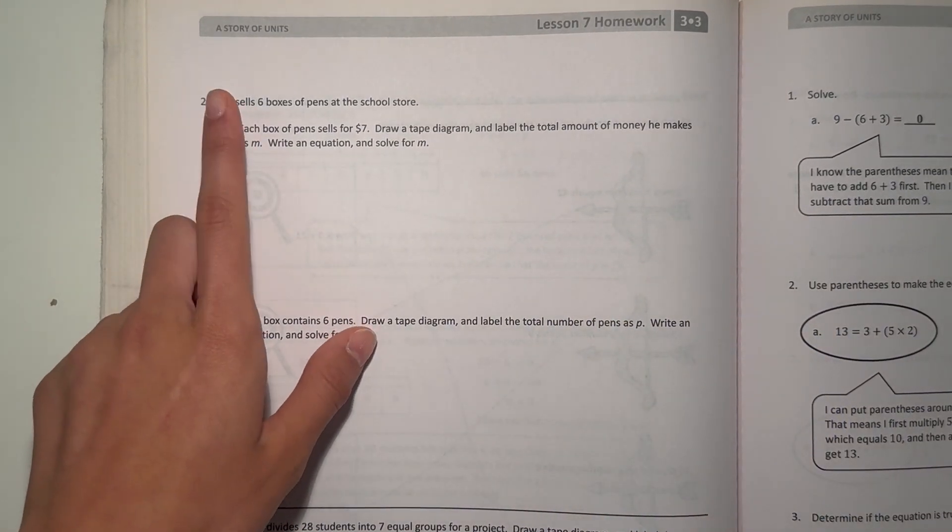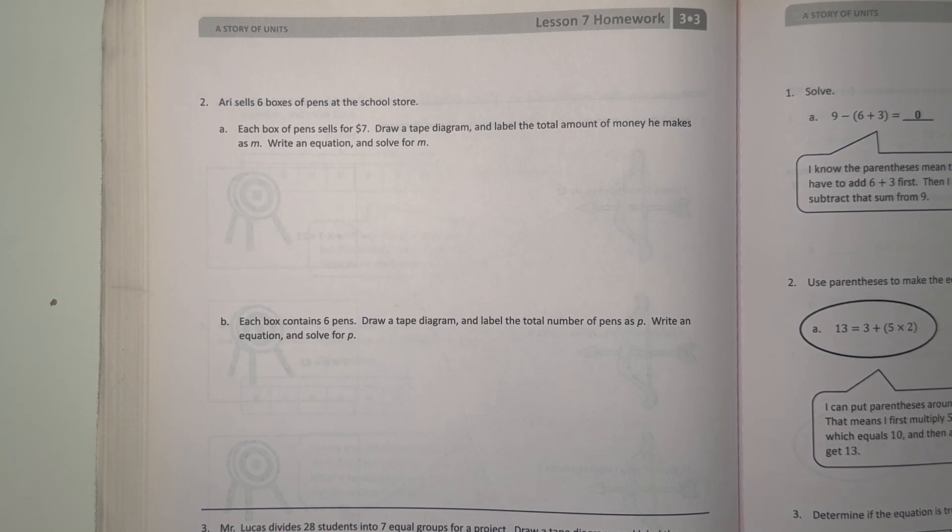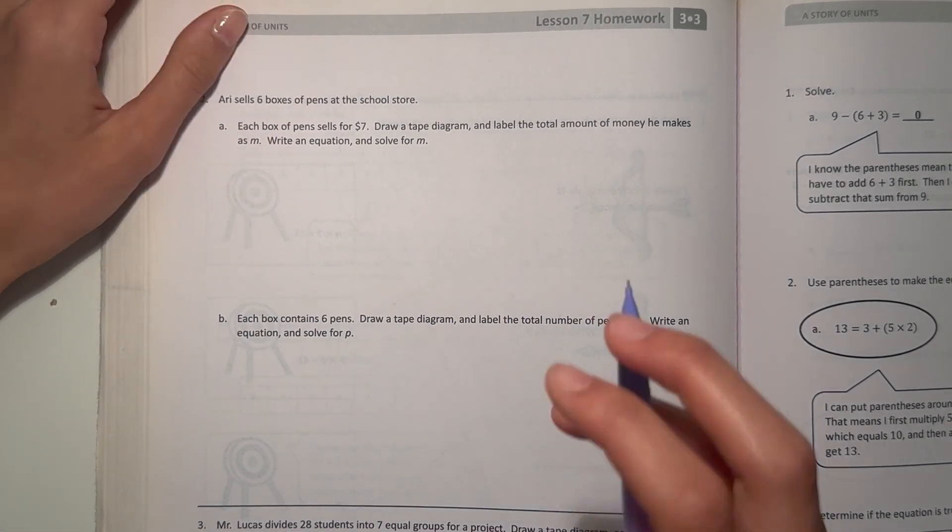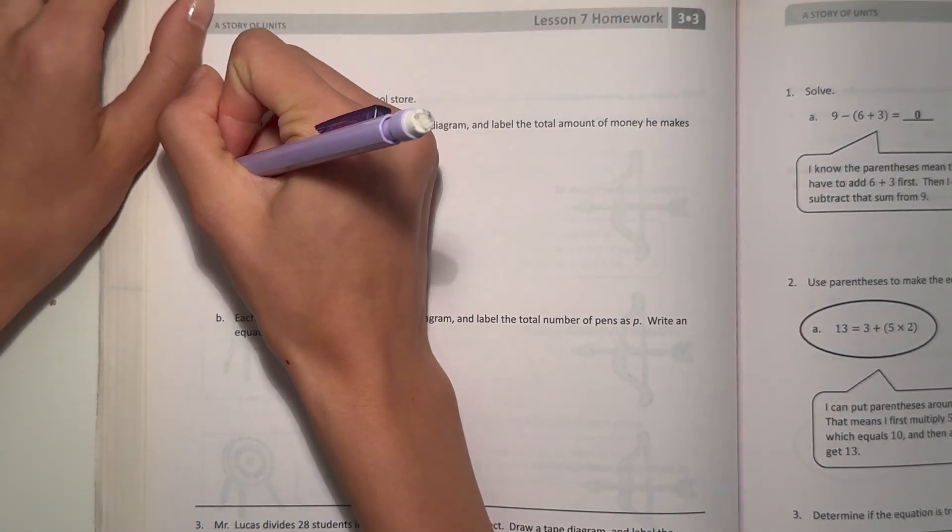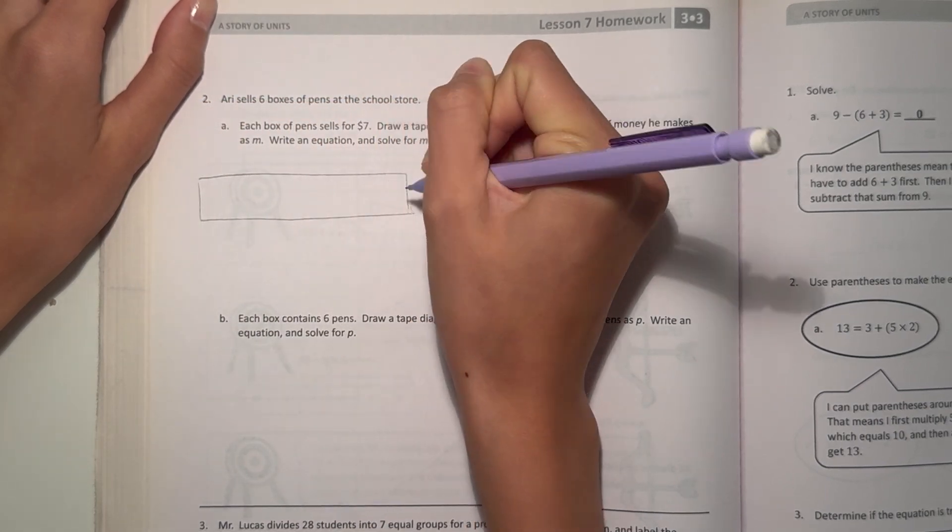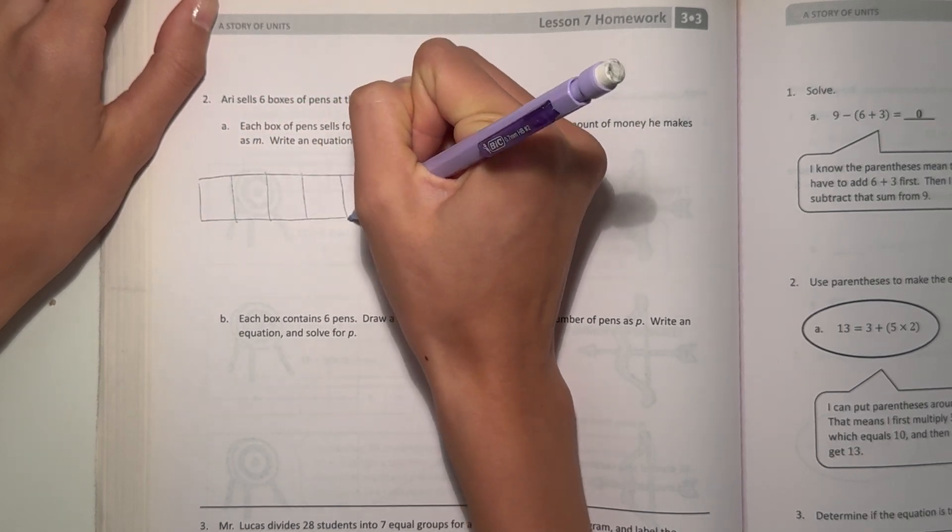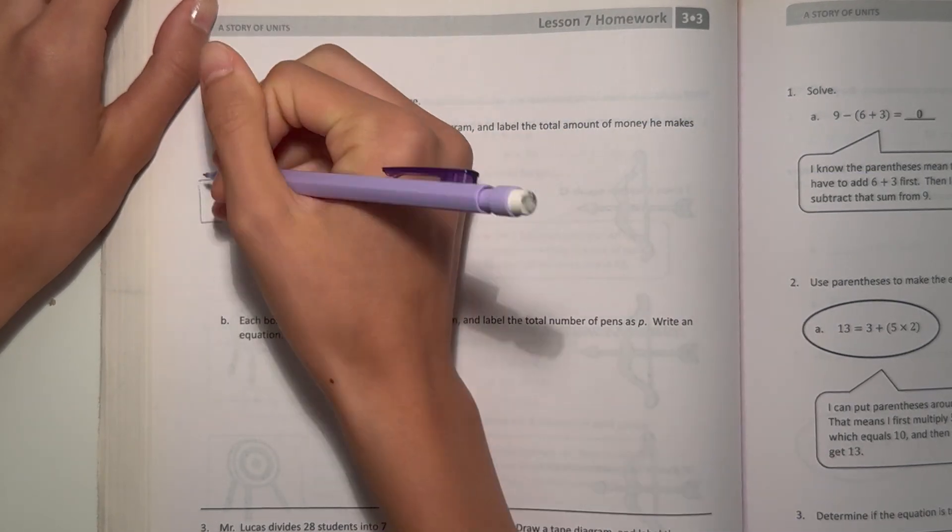Number 2. Ari sells 6 boxes of pens at the school store. A. Each box of pens sells for $7. Draw a tape diagram and label the total amount of money he makes as M. Write an equation and solve for M. Alright, so, tape diagram. So, 6 boxes.